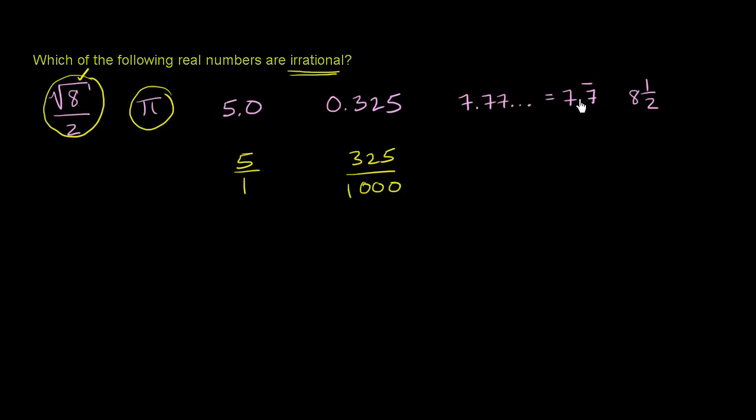Now if you have a repeating decimal, in other videos we'll actually convert them into fractions, but a repeating decimal can be represented as a ratio of two integers. Just as 1 third is equal to 0.333 on and on and on, or I could say like this, I could say 3 repeating. We can also do the same thing for that. I won't do it here, but this is rational. So it's not irrational.